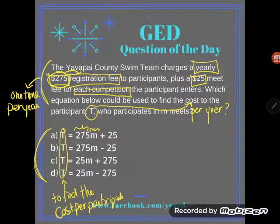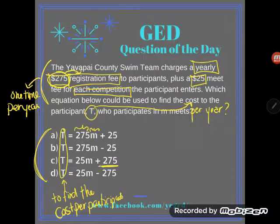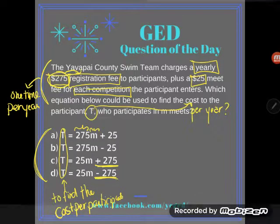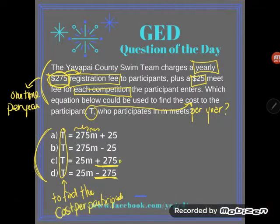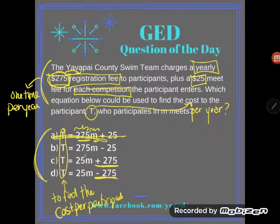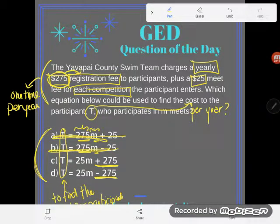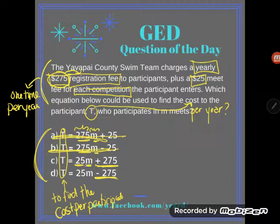I've got two answers where the $275 is not getting multiplied — neither one has an M on it, so those look pretty good to me. Whereas in the other one I'm taking $275 and multiplying it by the number of meets — no way. Now I like both C and D because I see that there's a $25 multiplying by the number of meets.